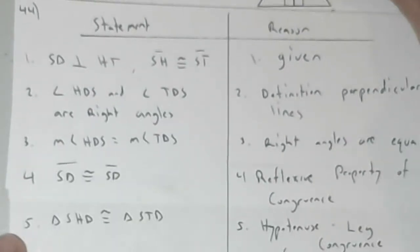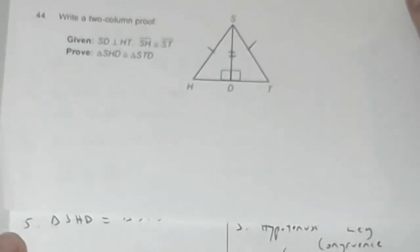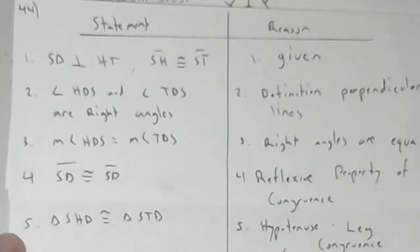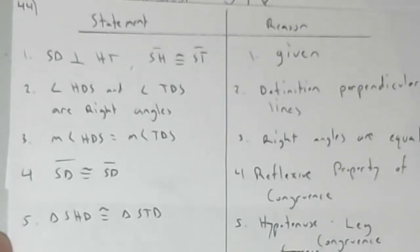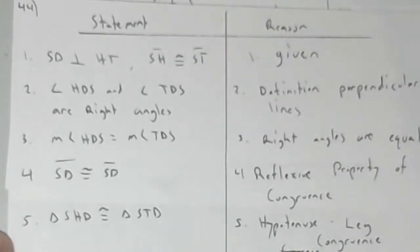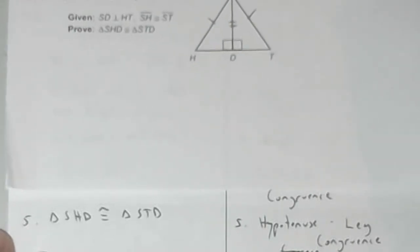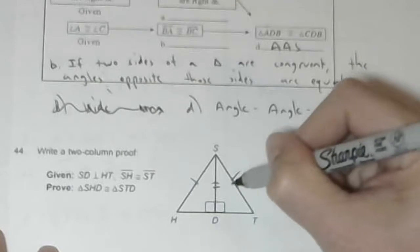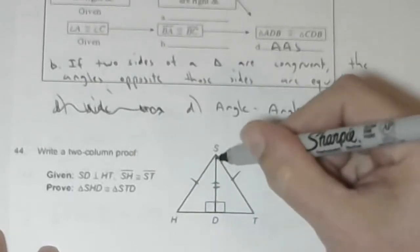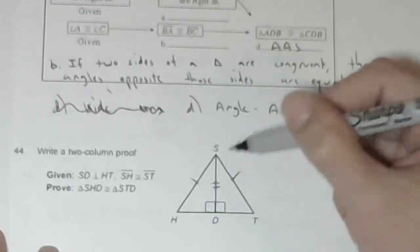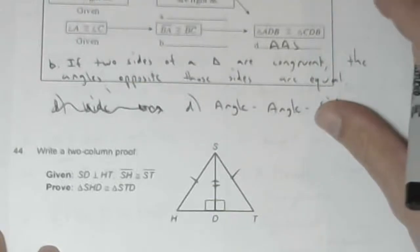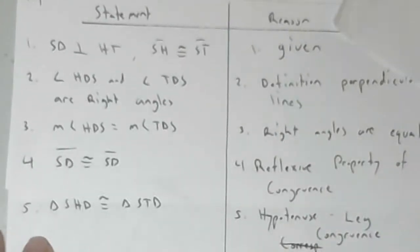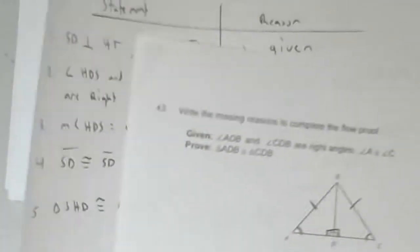Four is SD is equal to itself. SD is congruent to SD, which is the reflexive property of congruence. Now I can prove those two triangles congruent through the hypotenuse leg theorem. The two hypotenuses are equal, this leg is equal to itself, it's a shared leg. So by hypotenuse leg theorem, we prove the two right triangles are congruent.